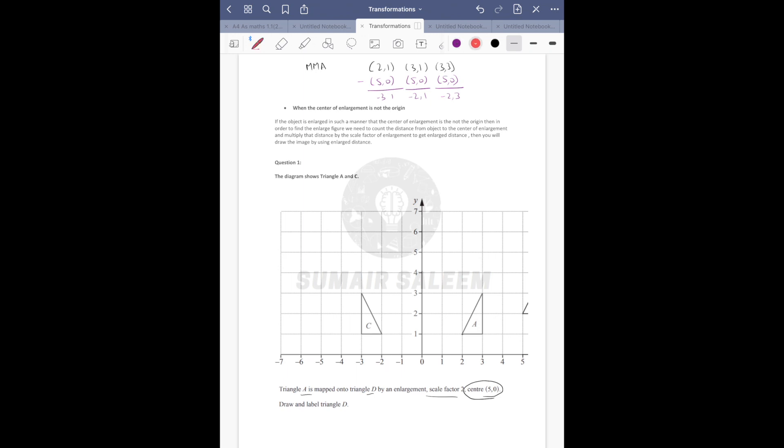Then scale factor 2, multiply: 2,2, 2,2, 2,2. This will be 2 minus 6, 2 minus 4, 6 minus 4. Then add the center back: 2 plus 0 is 2, minus 4 plus 5 is 1.